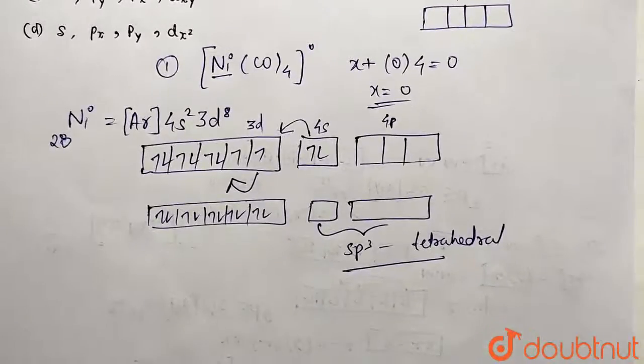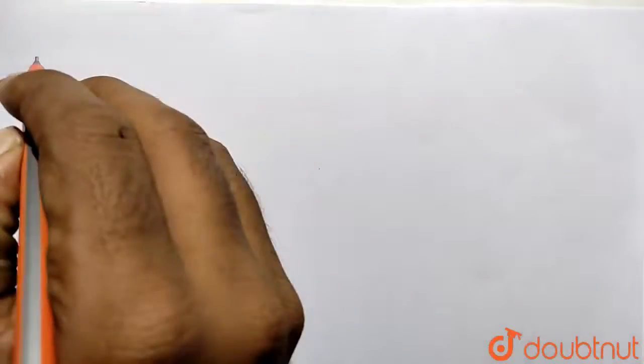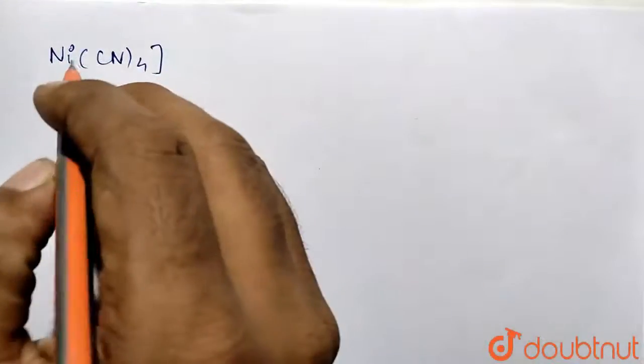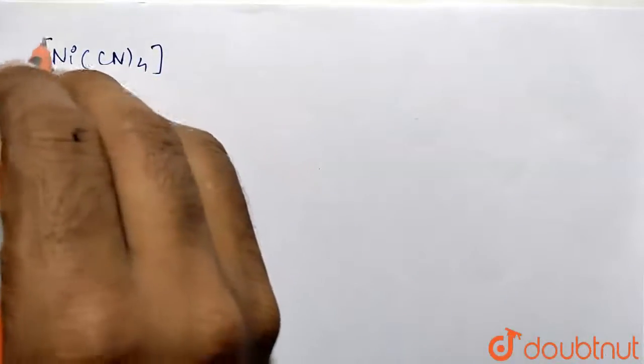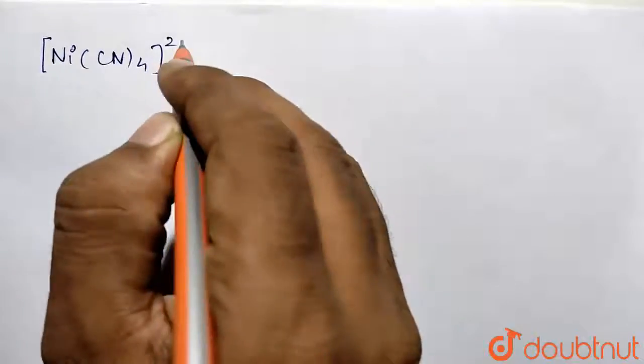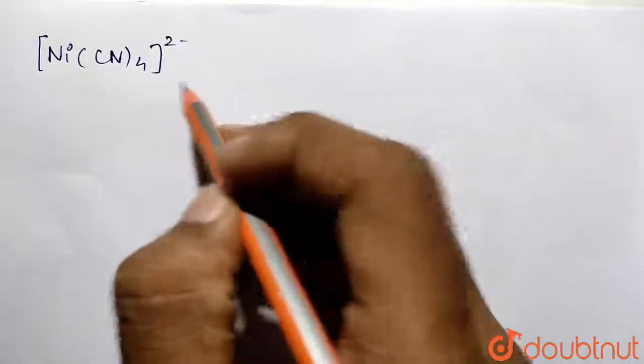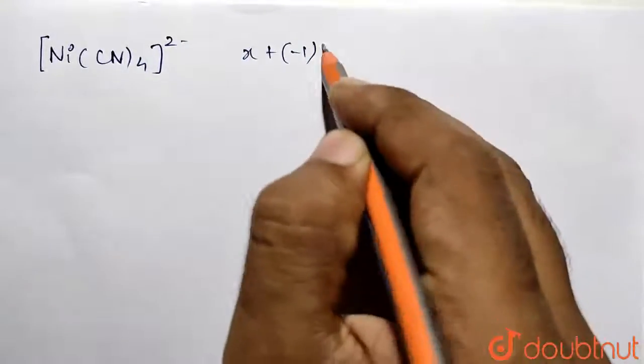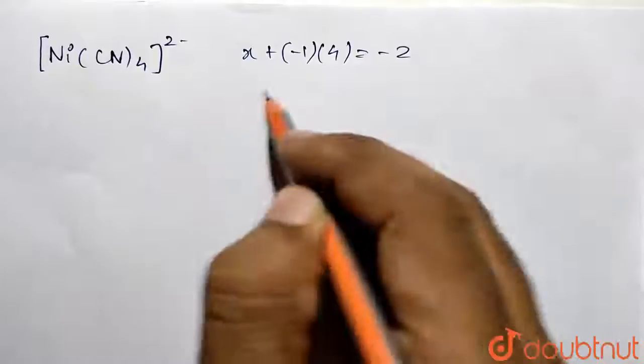Now we need to take another example. I have taken [Ni(CN)₄]²⁻ complex to explain the concept of square planar geometry. Basically the same steps would be done which we have done for the tetrahedral one.